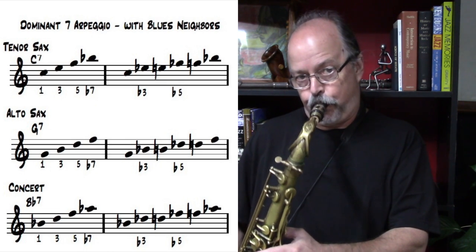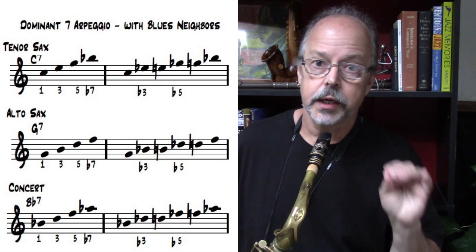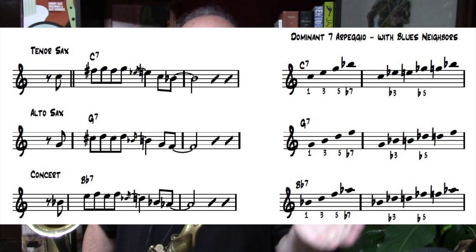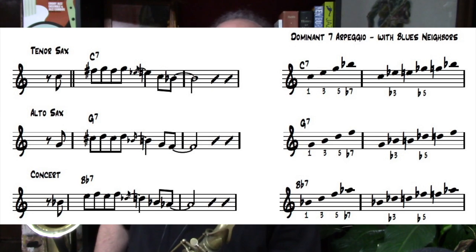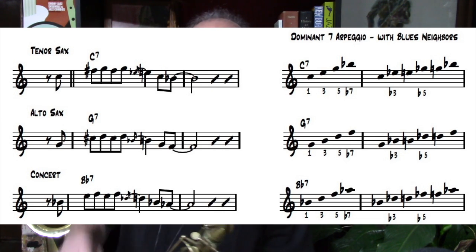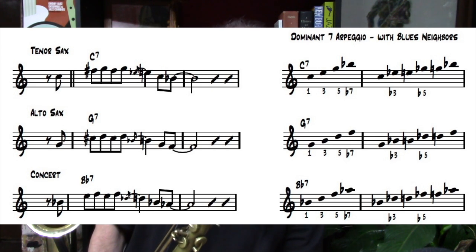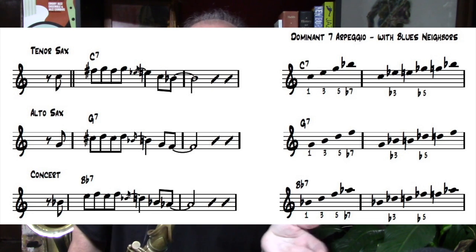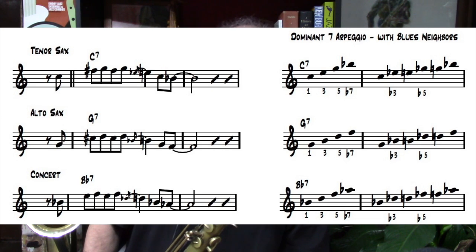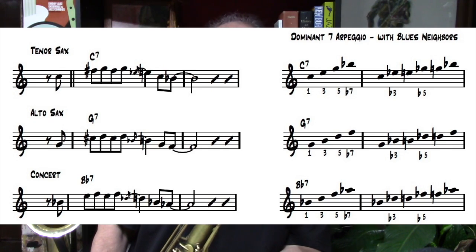We're really targeting notes primarily in the dominant arpeggio — I'm playing in C7 on tenor saxophone. So there I played C, E, G, B-flat — that's the one, three, five, and dominant seven (minor seven). Now let's think about some neighbor tones to the five: the lower neighbor, the flat five. On a C chord that's an F-sharp — the blues neighbor a half step below the five. Then we have the blues neighbor to the major third — the minor third pulling into the major third — and then the root followed by the dominant seven.